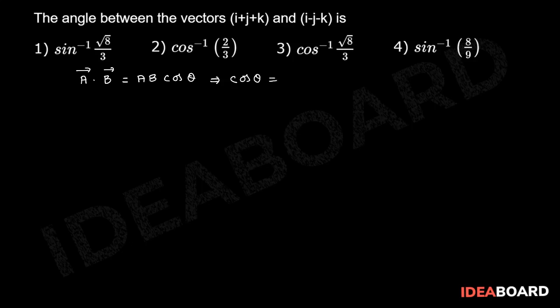cos theta is equal to a bar dot b bar by a b. Now they given a bar is equal to i plus j plus k, b bar is equal to i minus j minus k.